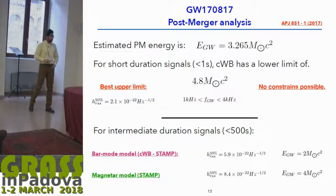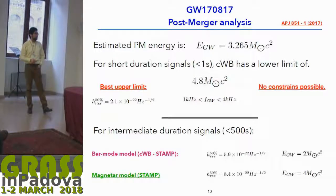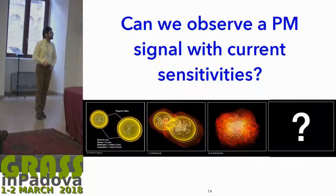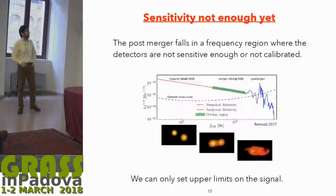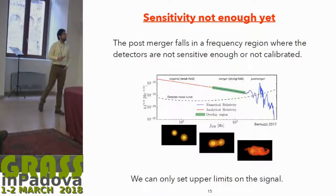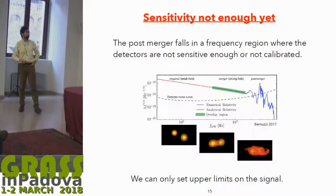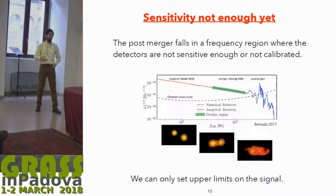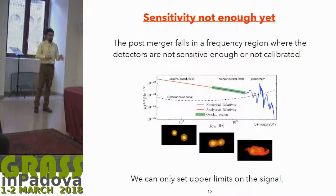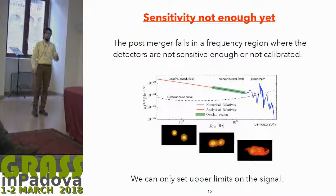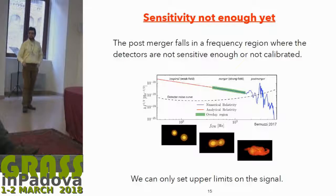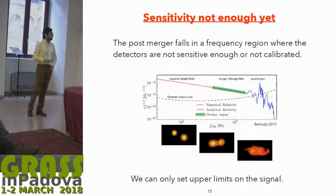For the magnetar model, the best upper limit is 8.4 × 10⁻²² with an estimated gravitational wave energy of 4 solar masses times c². Can we observe a post-merger signal with current sensitivity in the LIGO-Virgo network? The answer is not yet, because the sensitivity is not enough. The post-merger falls in a frequency band between 2 and 4 kilohertz where the detectors are not sensitive or well calibrated, and the black hole ring-down would be at 6 or 7 kilohertz — really outside the most sensitive frequency band of LIGO-Virgo. At the moment, we are only able to set upper limits on the signal.